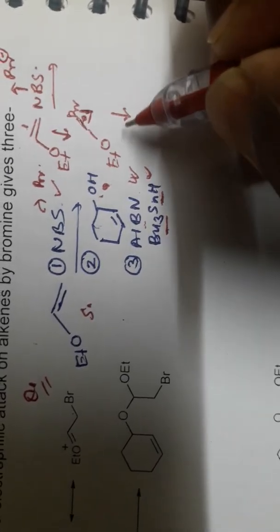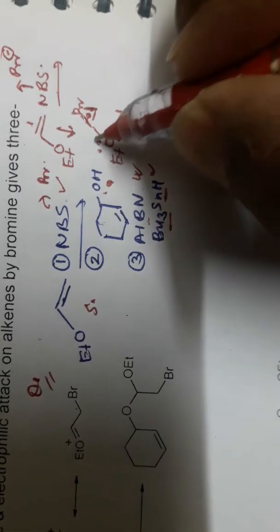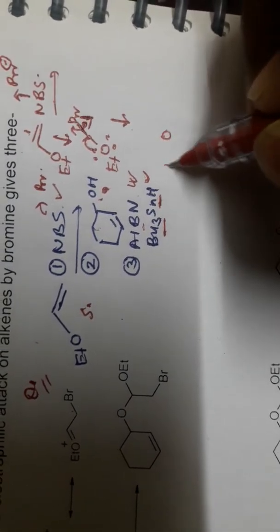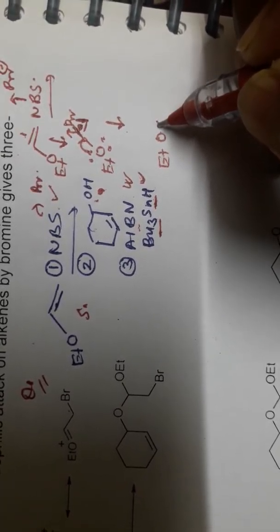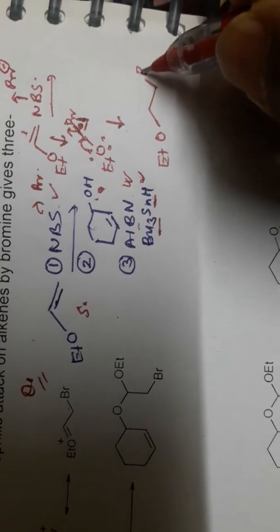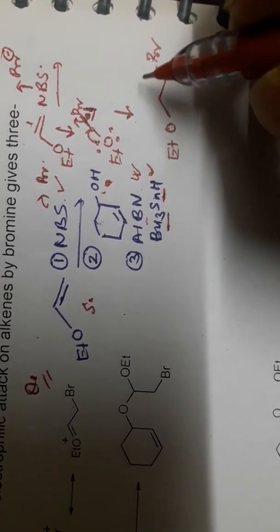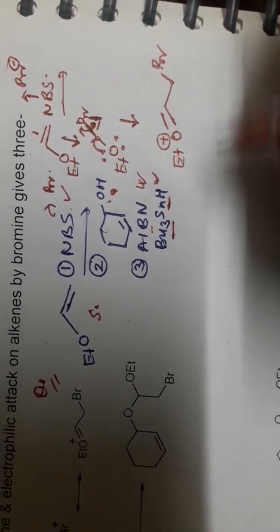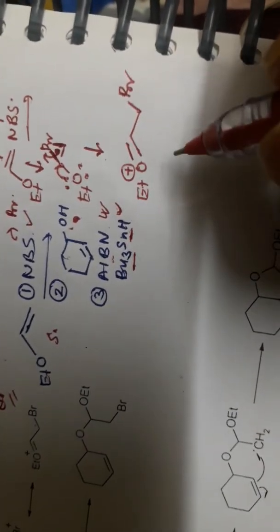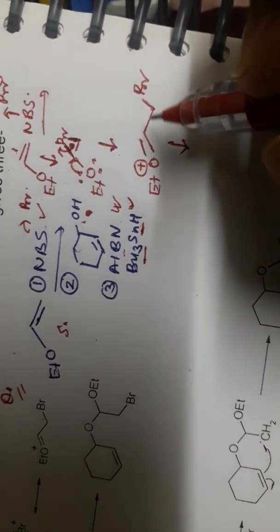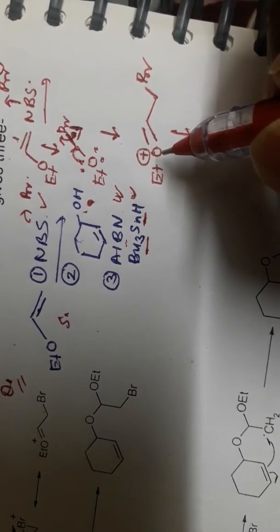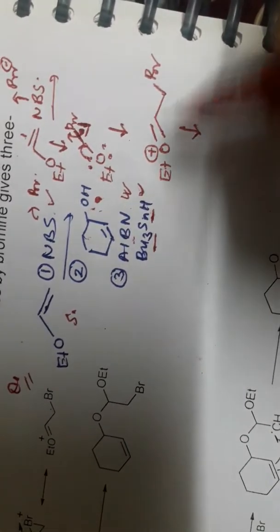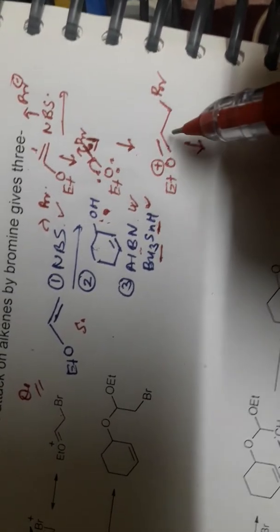After bromine adds, the lone pair of oxygen shifts here and this bond breaks down. Since the valency of oxygen becomes three, a positive charge is generated here on the oxygen, forming an oxocarbenium-type intermediate.